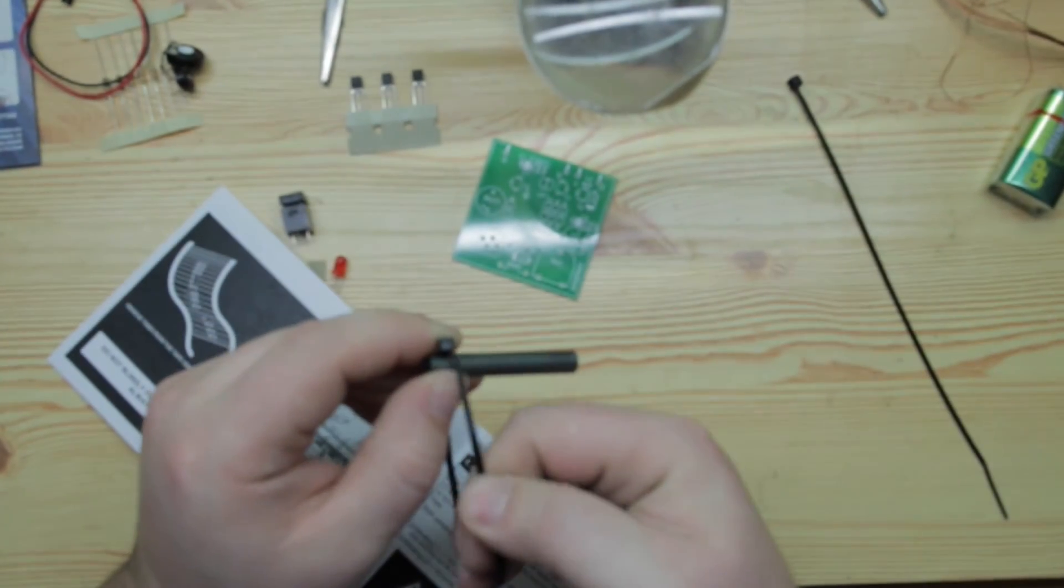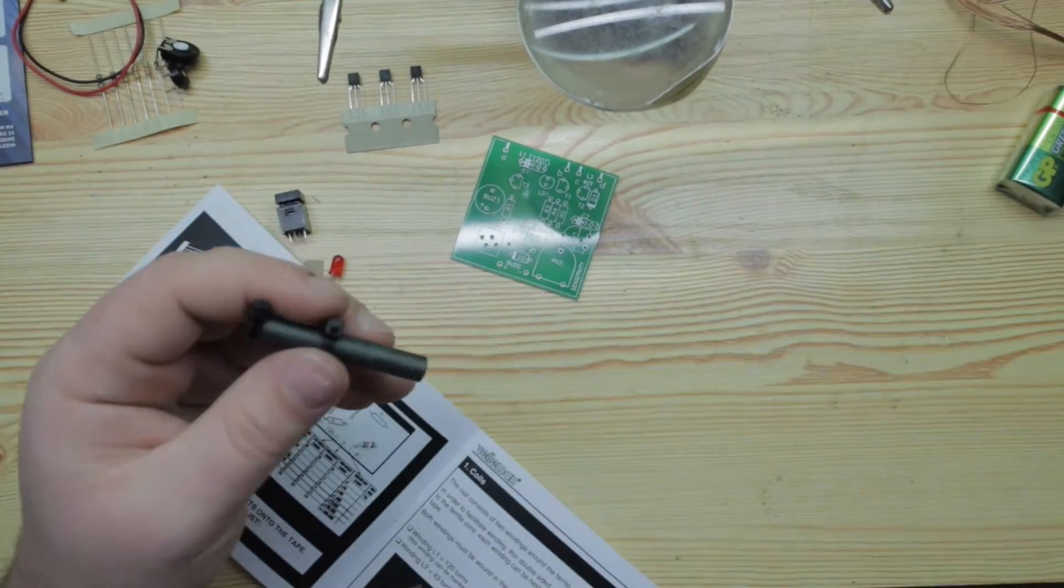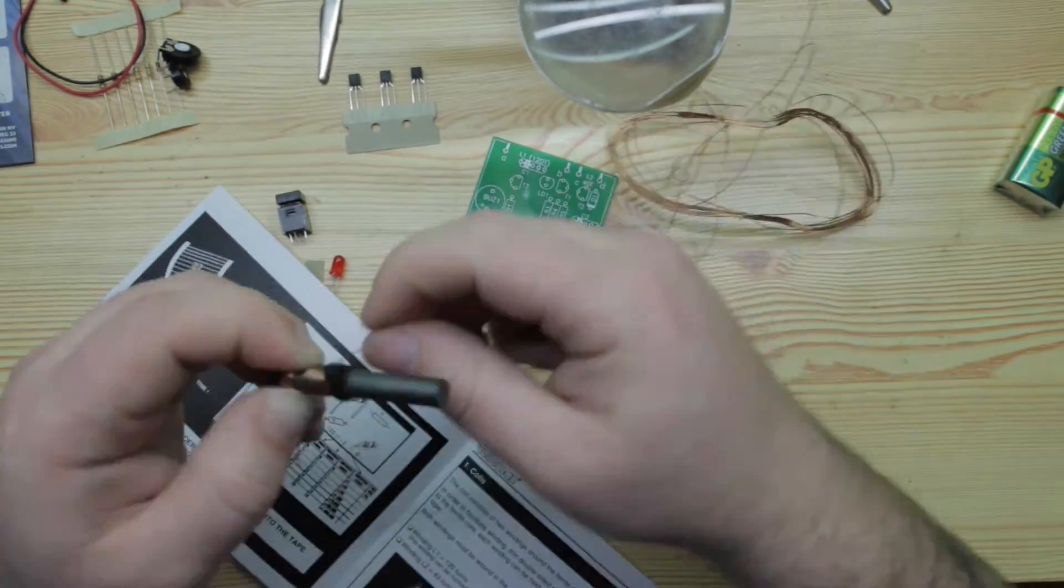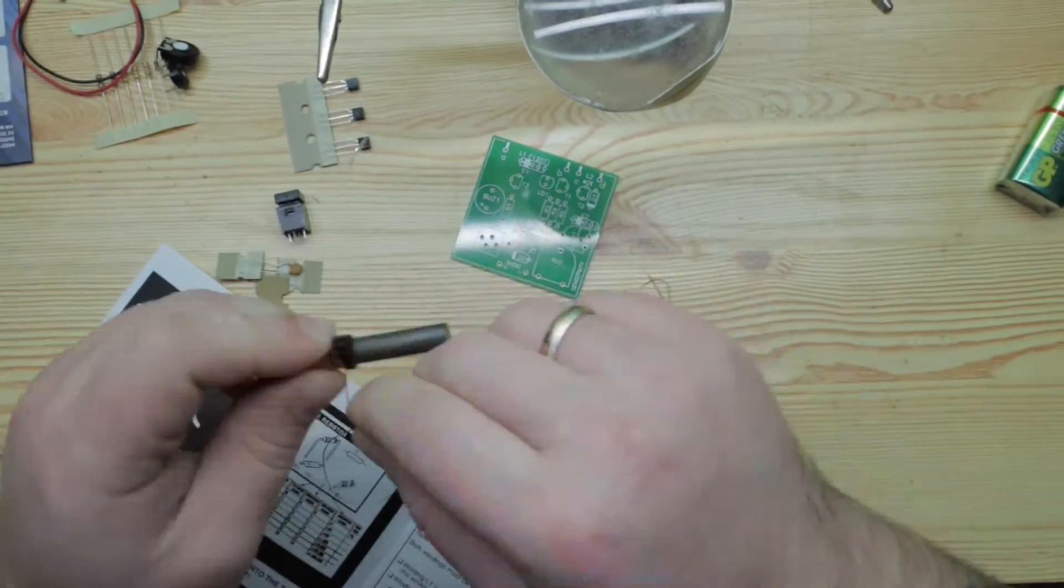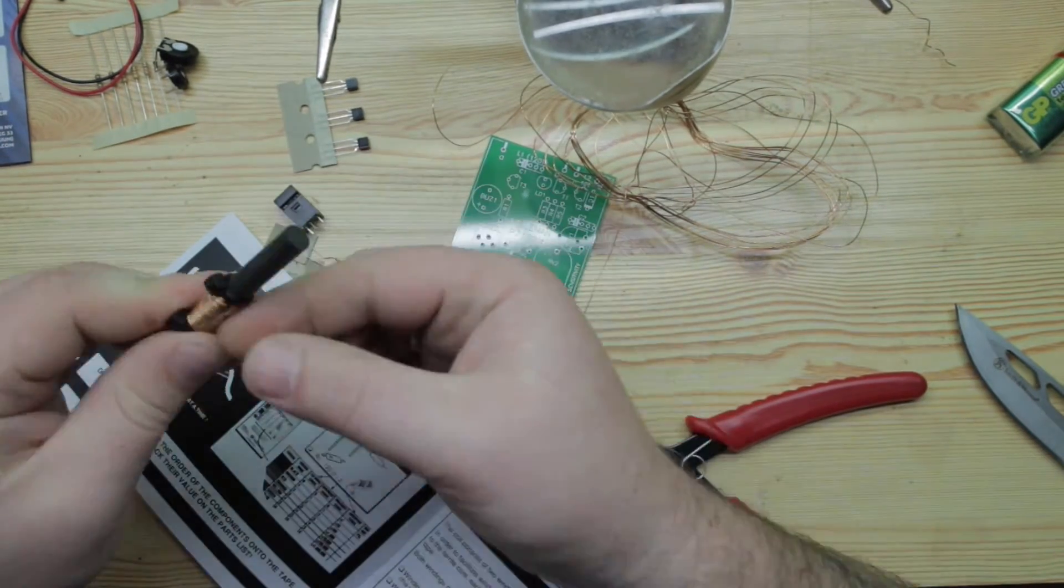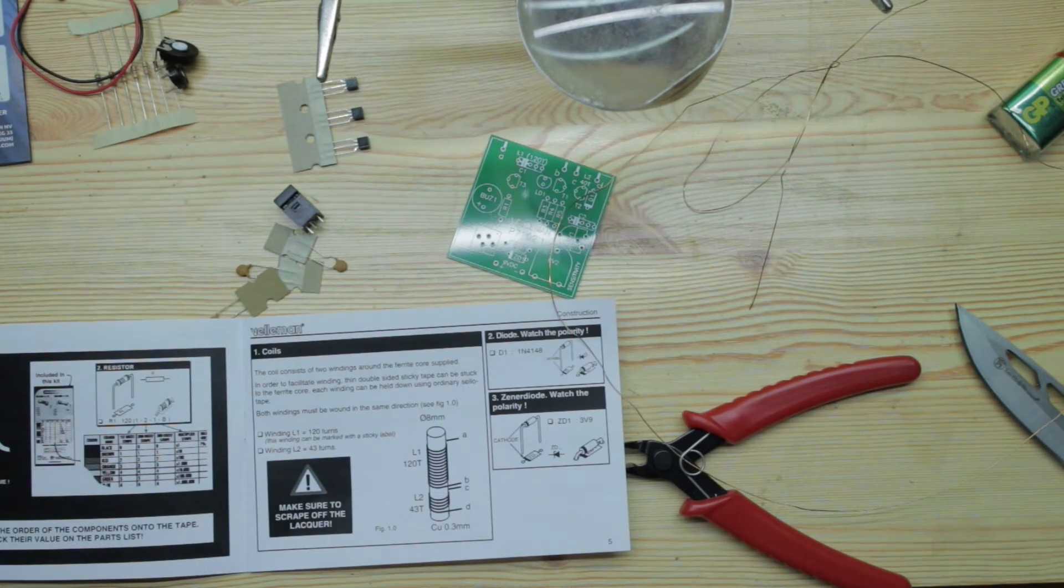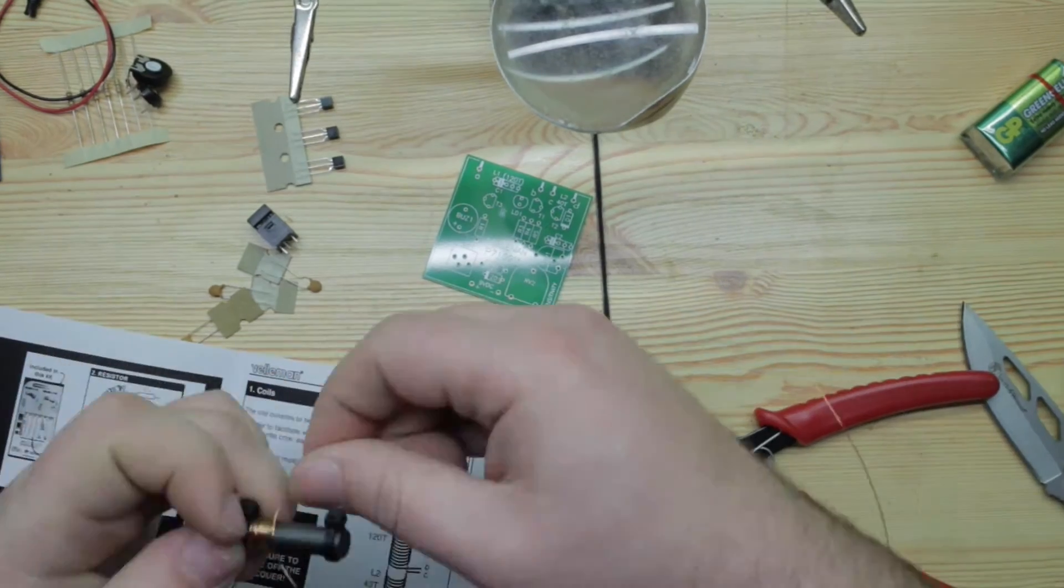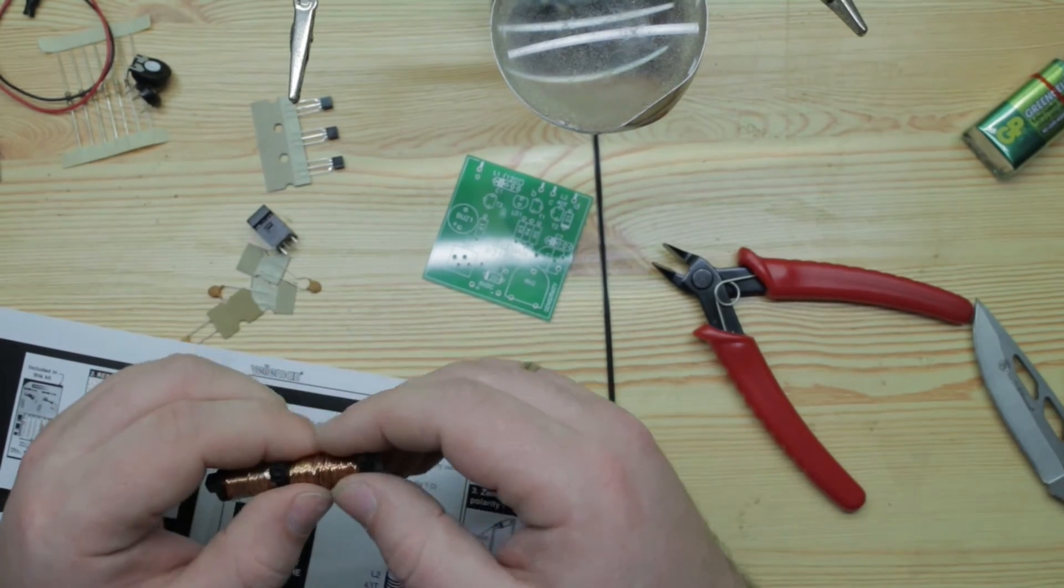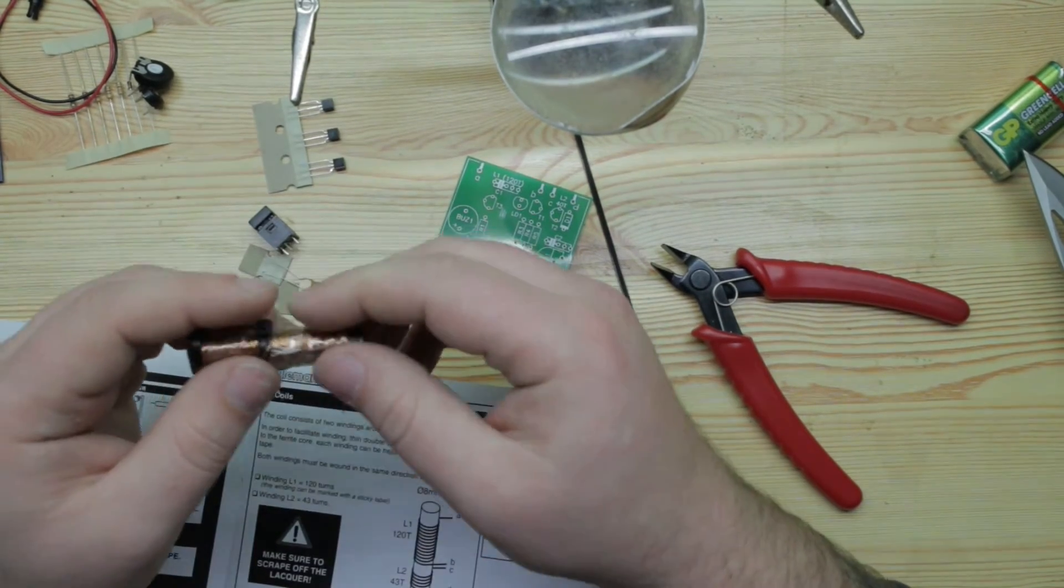I will make my starting point with the wire. Let's make 43 turns. So I have 43. Just a little bit of sticky tape to keep it in place. Let's make another coil which is 120 turns. A little bit of sticky tape. And we are done with the coils.